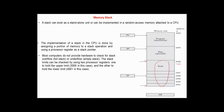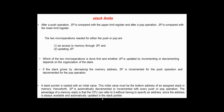In this example, 1000 is the upper bound and 4001 is the lower bound. After a push operation, the stack pointer is compared with the upper limit register, and after a pop operation the stack pointer is compared with the lower limit register. The two micro-operations needed for either push or pop are: an access to memory through the stack pointer and updating the stack pointer.